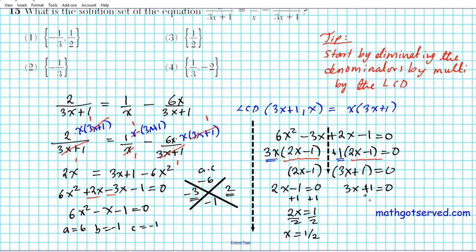And then this one, subtract 1, you have 3x equals negative 1, divide by 3, and you have x equals negative 1/3.